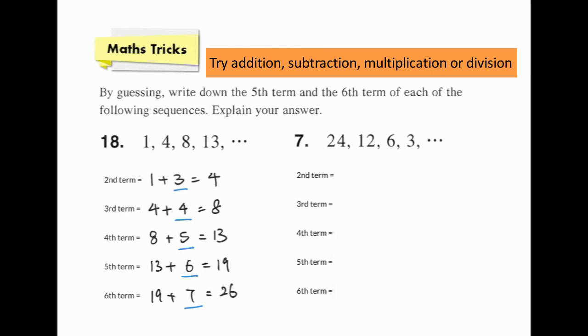Let's have a look at question 7. We have 24, 12, 6 and 3. Since the numbers are in descending order, we should consider subtraction or division this time.